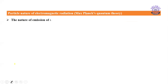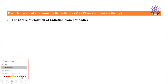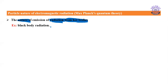What are those properties? The first observation which was not explained by the wave nature is the nature of emission of radiation from hot bodies. For example, if you take an iron rod and heat it on a flame, after some time it becomes red hot and starts to emit radiation. The nature of these radiations — like black body radiations — cannot be explained by the wave nature.